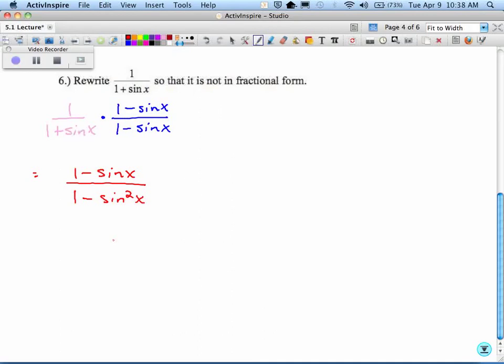The bottom is 1 minus sine squared. So you take the number one identity, and you take sine of x squared to the other side. So now I have 1 minus sine of x over cosine squared of x.